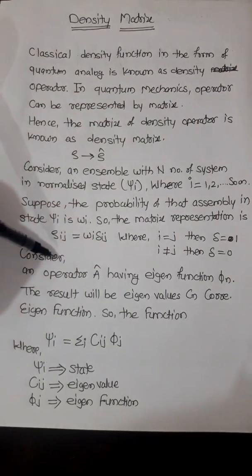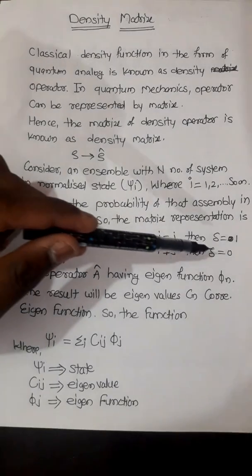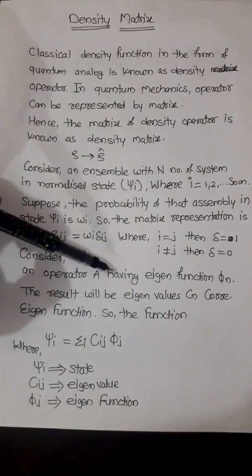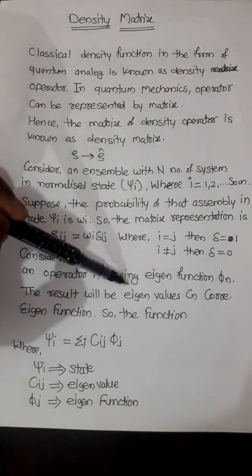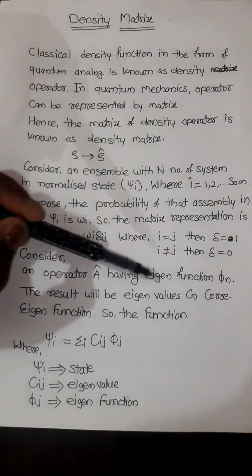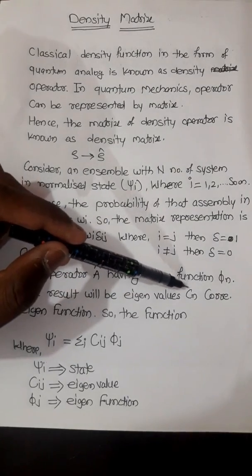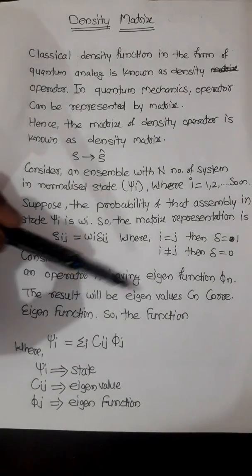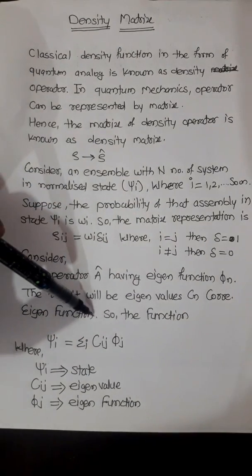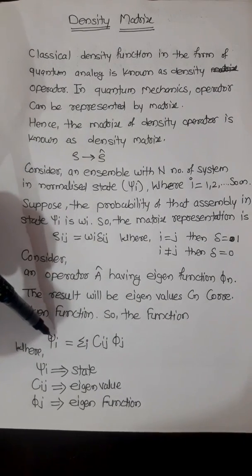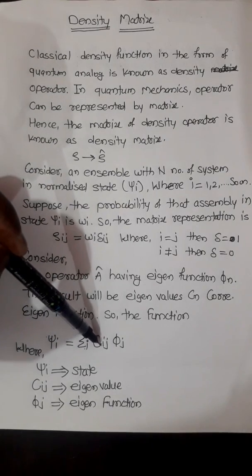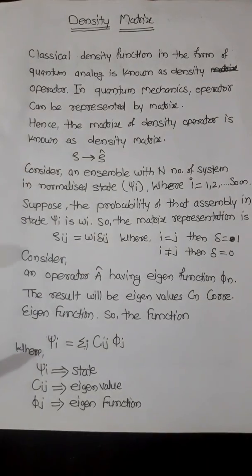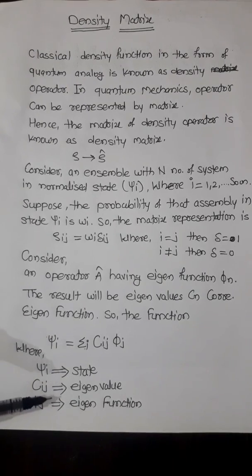Now consider an operator A having eigenfunction φₙ, where A is any operator with eigenfunctions φₙ corresponding to eigenvalues cₙ. The state ψᵢ can be expanded as ψᵢ = Σⱼ Cᵢⱼ φⱼ, where Cᵢⱼ are the eigenvalues and φⱼ are the eigenfunctions.